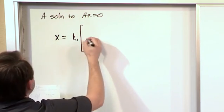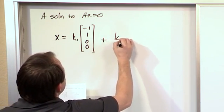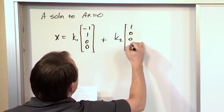It looks something like this: x = K1 times the column vector [-1, 1, 0, 0] plus K2 times the column vector [1, 0, 0, 1].